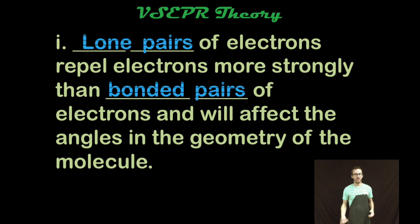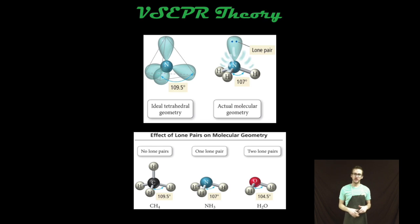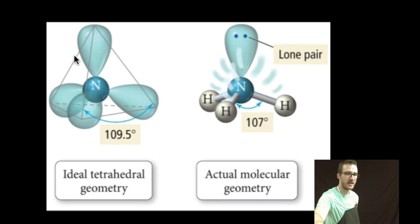A couple of other quick notes about VSEPR theory before we actually start using it to predict the shapes on our own. Recognize that lone pairs of electrons are going to repel more strongly than bonded pairs of electrons and will affect the angles in the geometry of the molecule. And so as you take a look at your notes or as you take a look at the image on the screen, notice here if my central nitrogen atom was bonded to four individual atoms, the bond angles would be exactly 109.5 degrees.